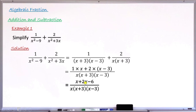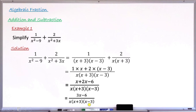Collecting like terms: x + 2x = 3x, giving 3x−6 all over the LCM which is x(x+3)(x−3). This is the final result — the addition of the two fractions gives 3x−6 over x(x+3)(x−3). Let's move on to another example.